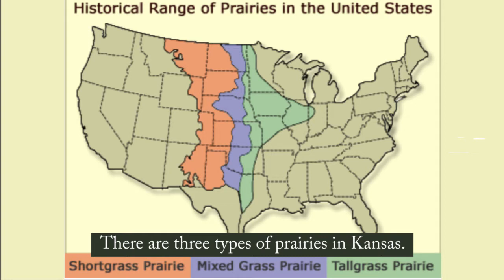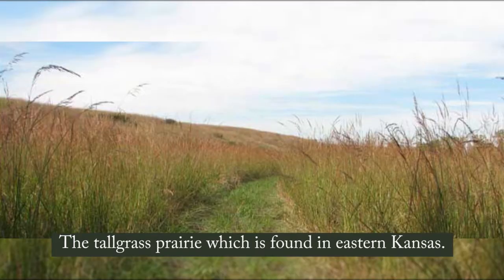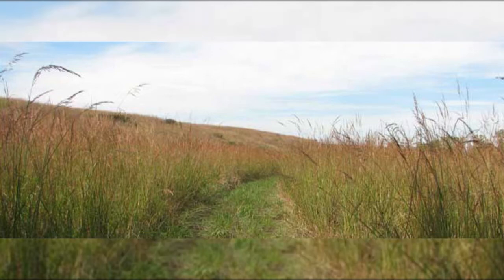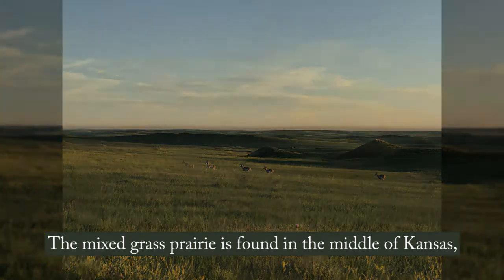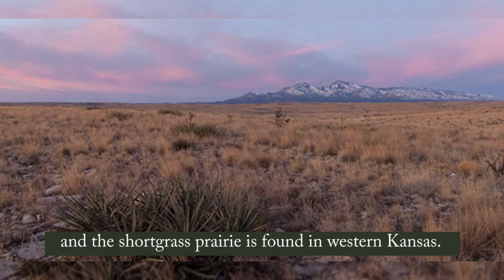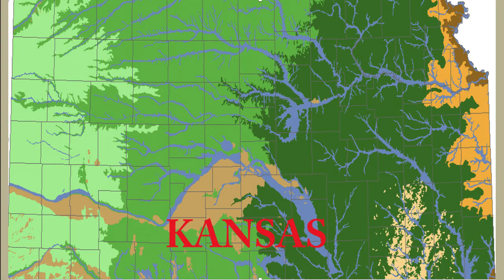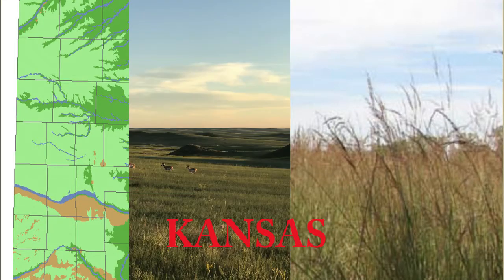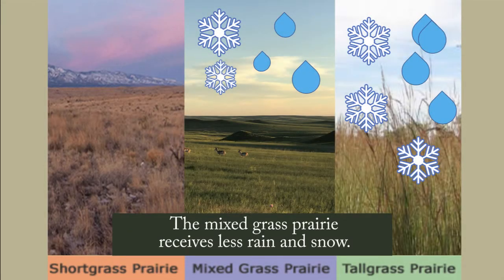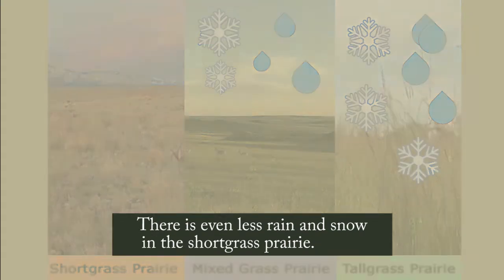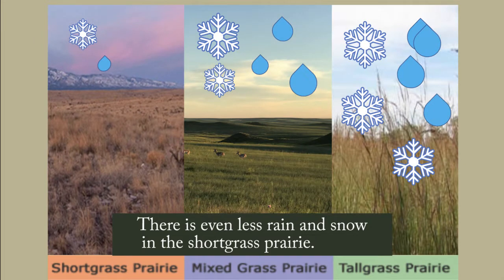There are three types of prairie in Kansas. The tall grass prairie, which is found in eastern Kansas. The mixed grass prairie is found in the middle of Kansas. And the short grass prairie is found in western Kansas. The tall grass prairie receives the most rain or snow. The mixed grass prairie receives less rain and snow. There is even less rain and snow in the short grass prairie.